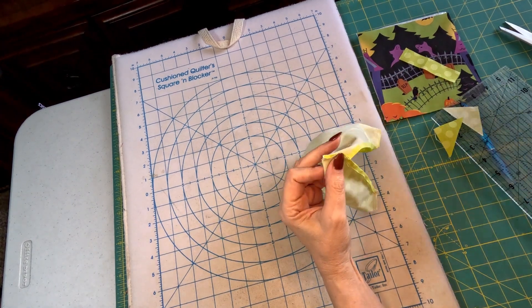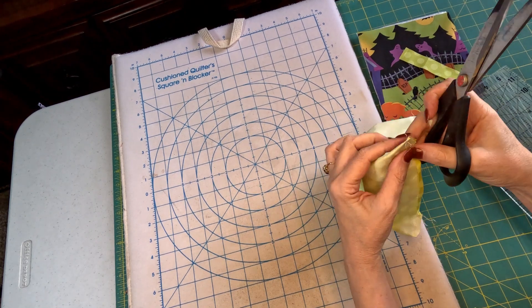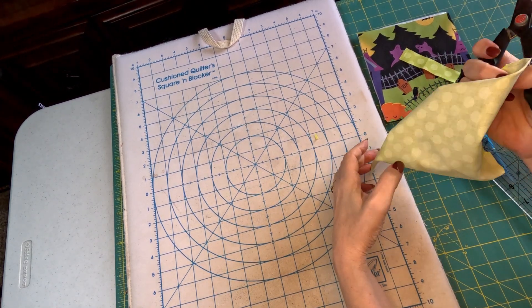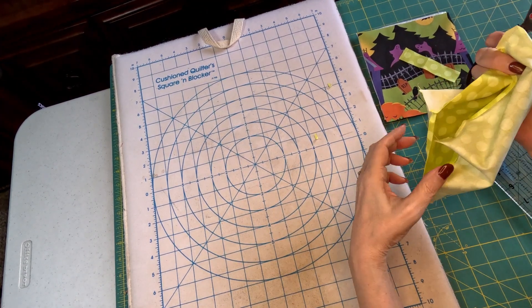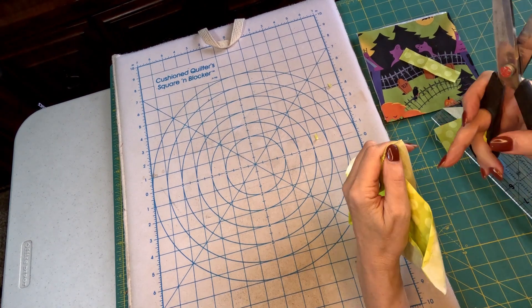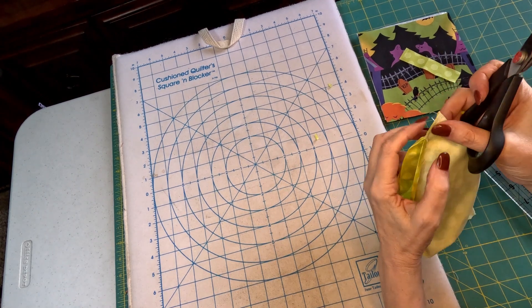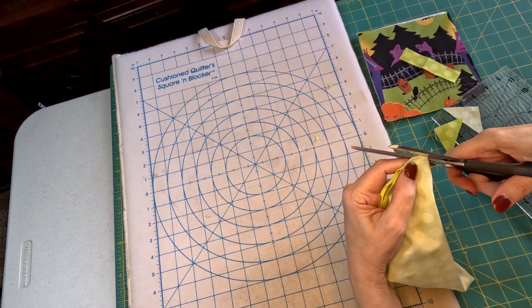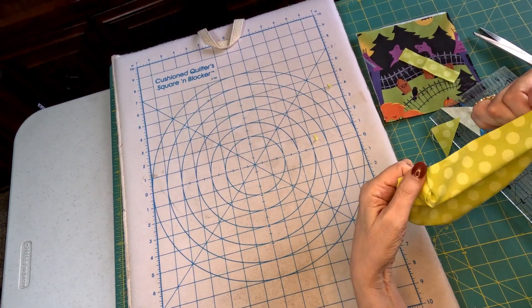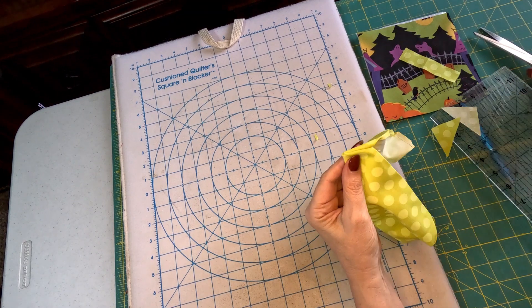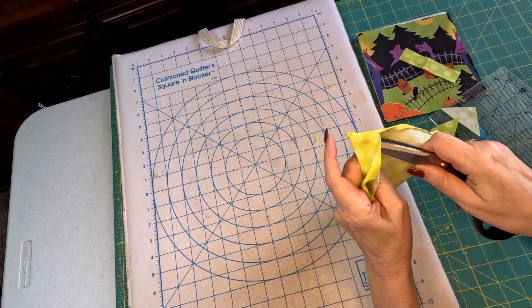Now that I've got those all sewn, we're going to clip our corner right next to the center. Now let's turn it right side out. Make sure our corners get poked out nice and neat.